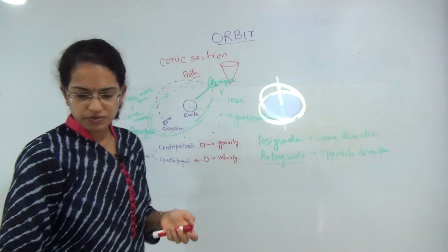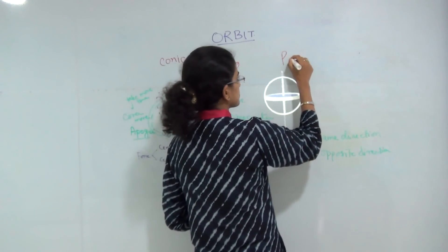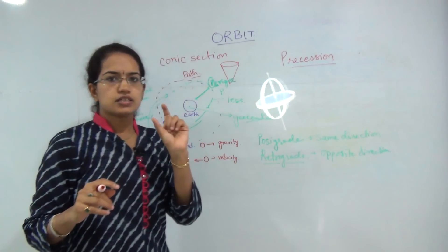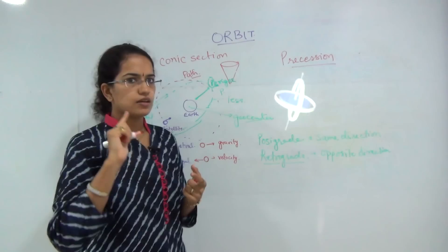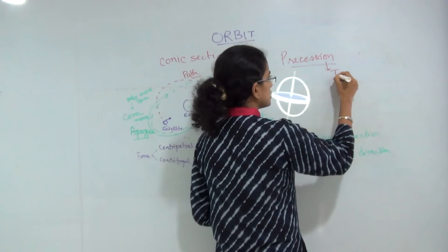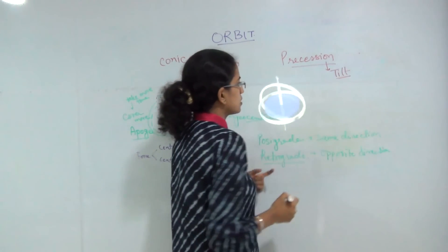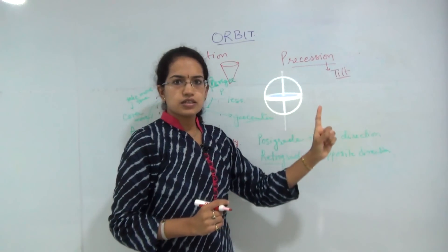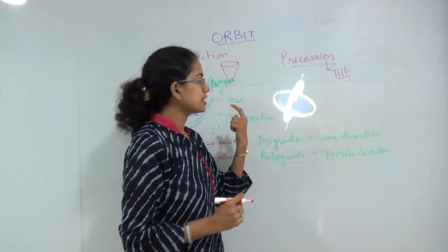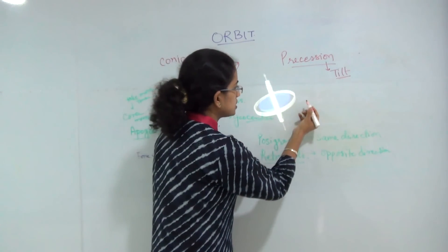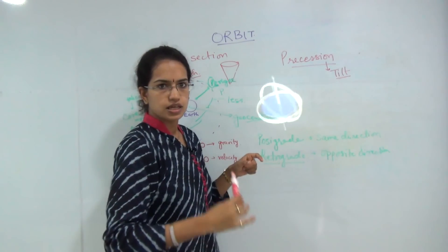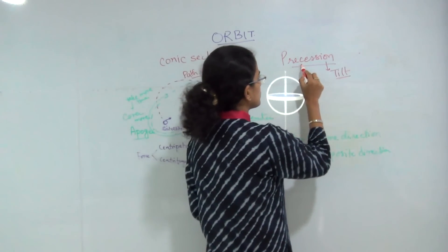The next topic we will discuss is precession. Consider a spinning top — precession occurs whenever there is a tilt. As the top spins, towards the end it starts to wobble, and that wobbling is precession. It changes its axis and finally falls down — that is what precession is.